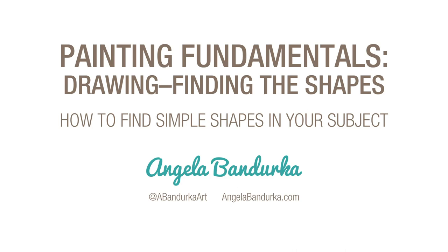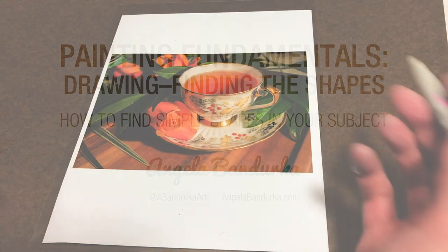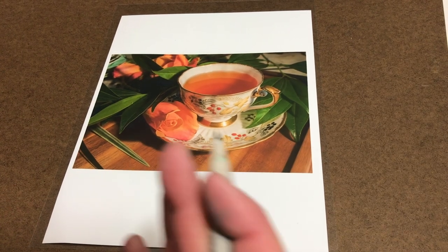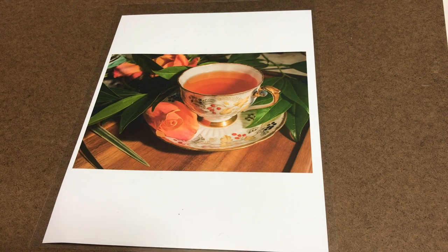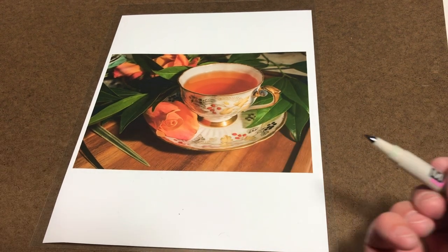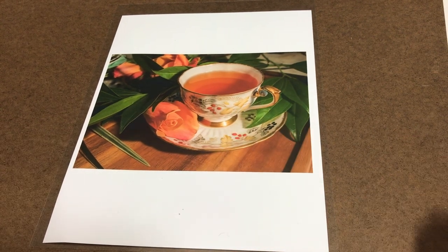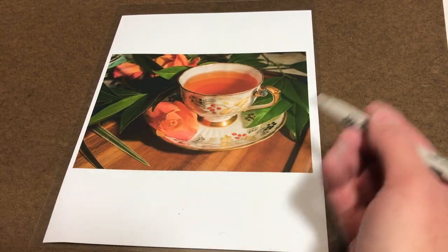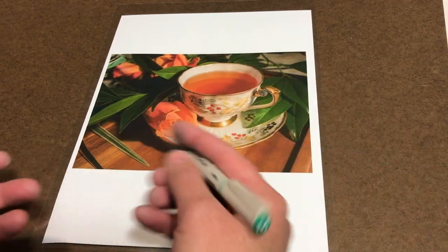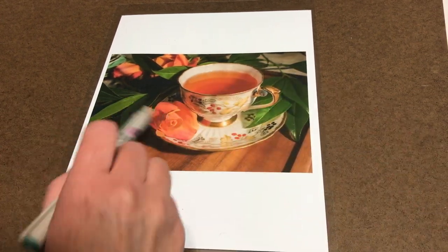In trying to find the shapes of something, some of them are more obvious than others, and there's no one way to do it. For example, the flower. There's multiple ways I could look at this, and I could make it really confusing, but what I try and think about—